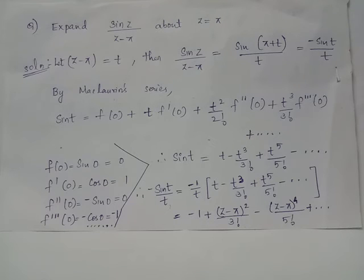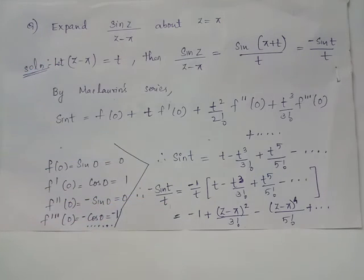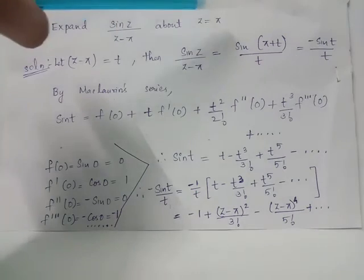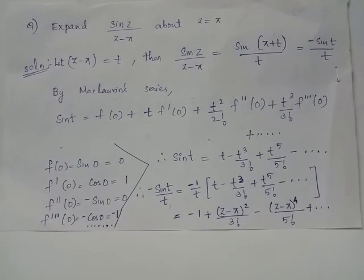Replacing t by (z - π), the final result is: -sin(t)/t = -1 + (z - π)²/3! - (z - π)⁴/5! + etc. This is the series expansion of the given function about z = π, expressing it in powers of (z - π).